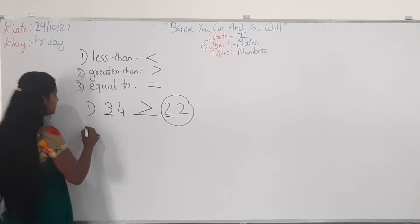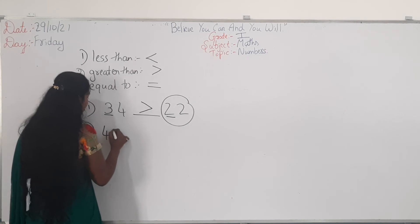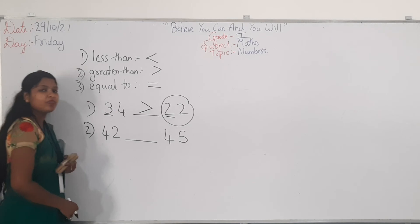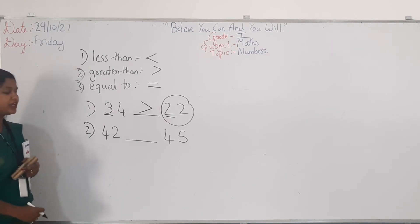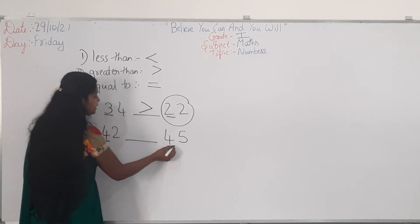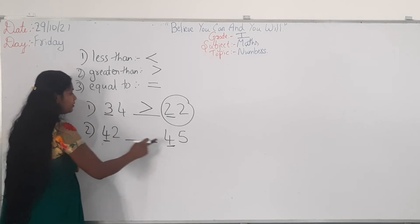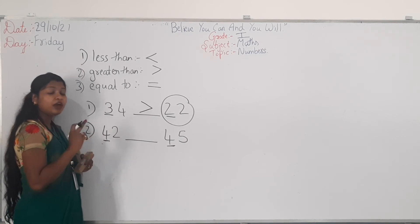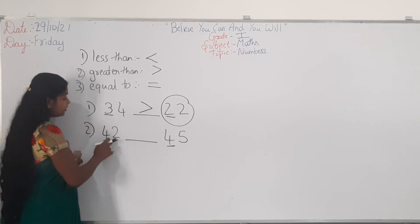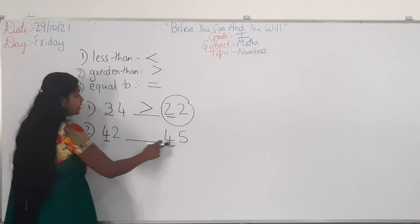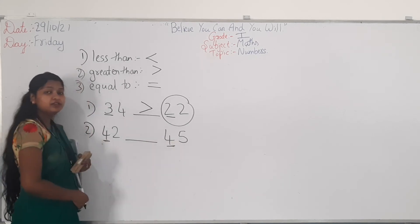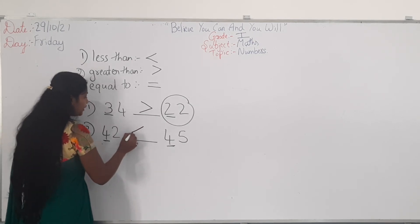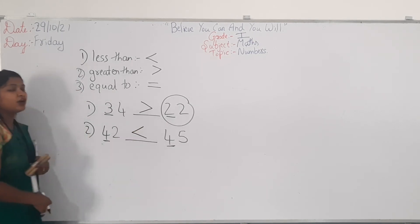Similarly, see: 42 blank 45. Shall we compare? See the first digits — here it is 4 and here it is 4. Same numbers, so we can't compare. We have to check the next digit. The next digit here is 2 and here it is 5. Since 2 is less than 5, so 42 is less than 45.